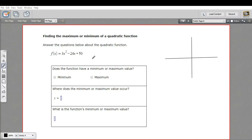In this problem, we have a quadratic function, and we're being asked to find the maximum or the minimum. In this case, we have a positive coefficient for the x squared term, so we know this parabola is going to open upward. What that means is this one has a minimum value at its vertex.